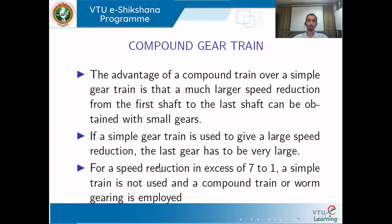Whenever a large speed reduction is required from the first shaft to the last shaft, it is preferable to use a compound gear train compared to a simple gear train. Using a simple gear train for the same speed reduction would require a very large gear at the last shaft. Whenever a speed reduction in excess of 7:1 is needed, it is better to use a compound gear train or a worm gear.